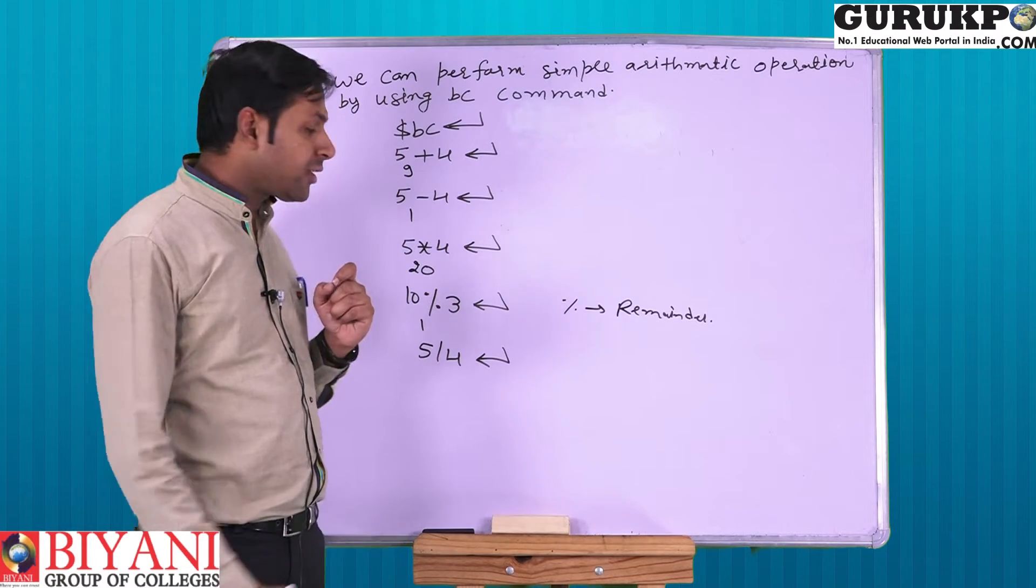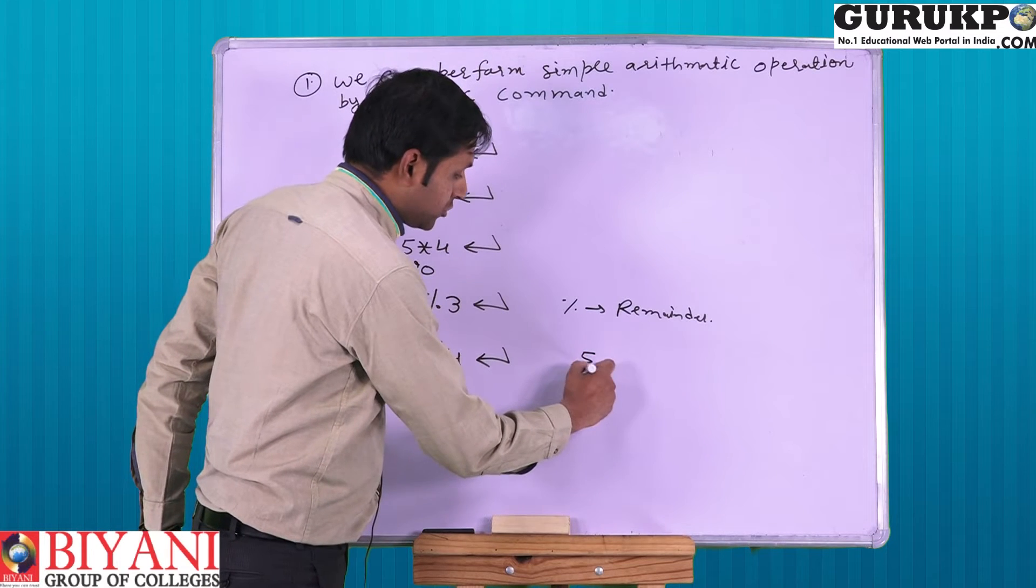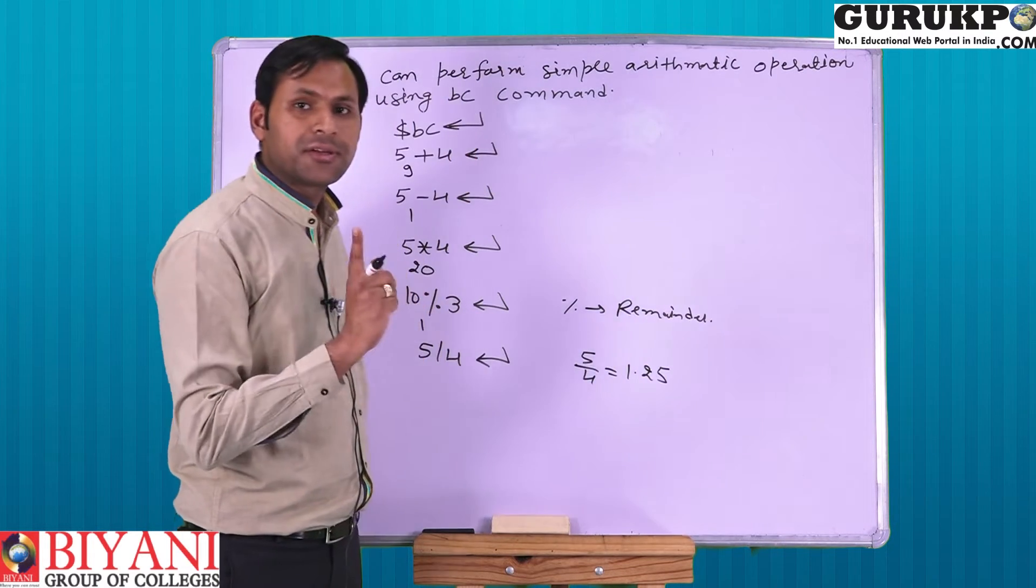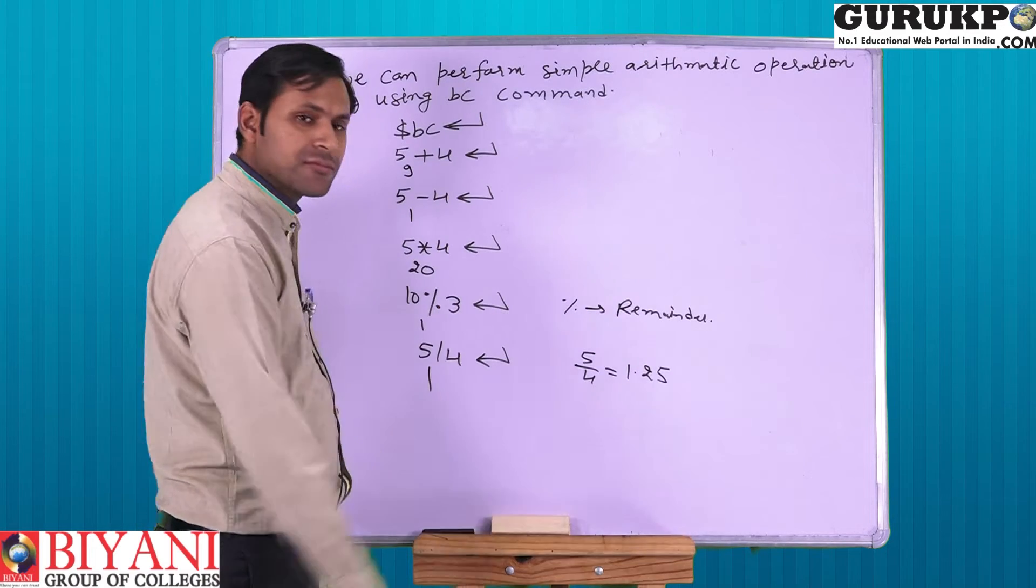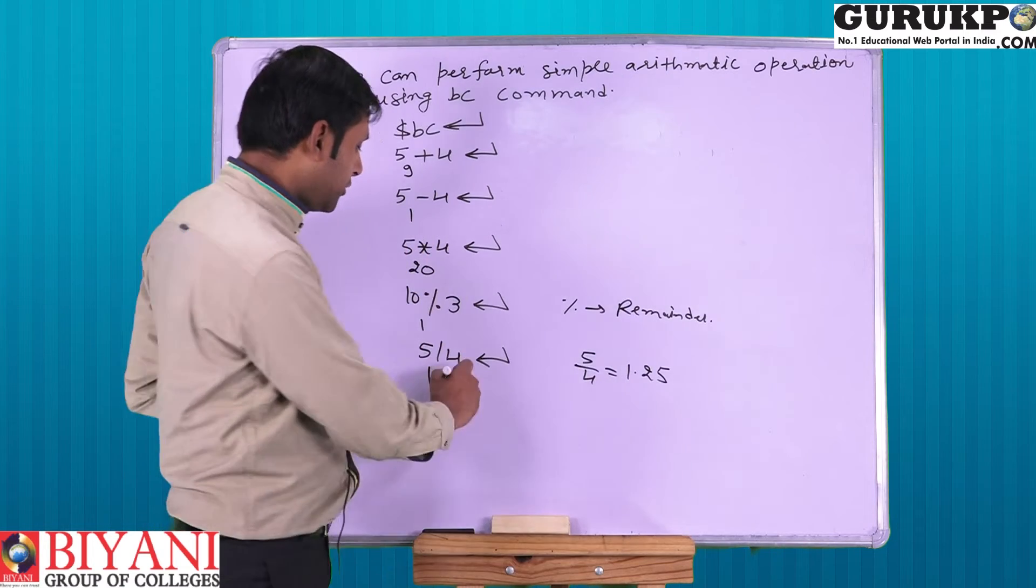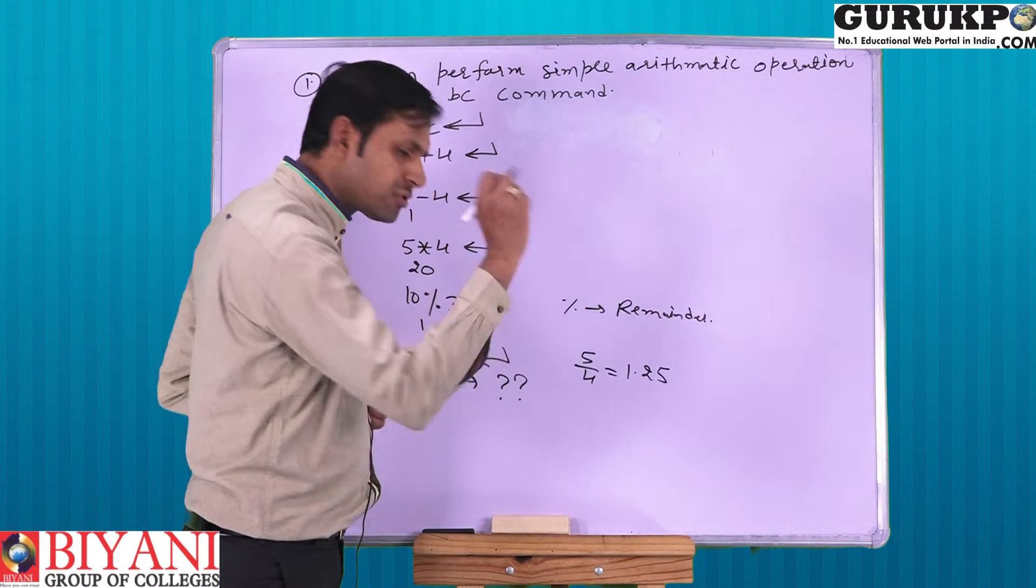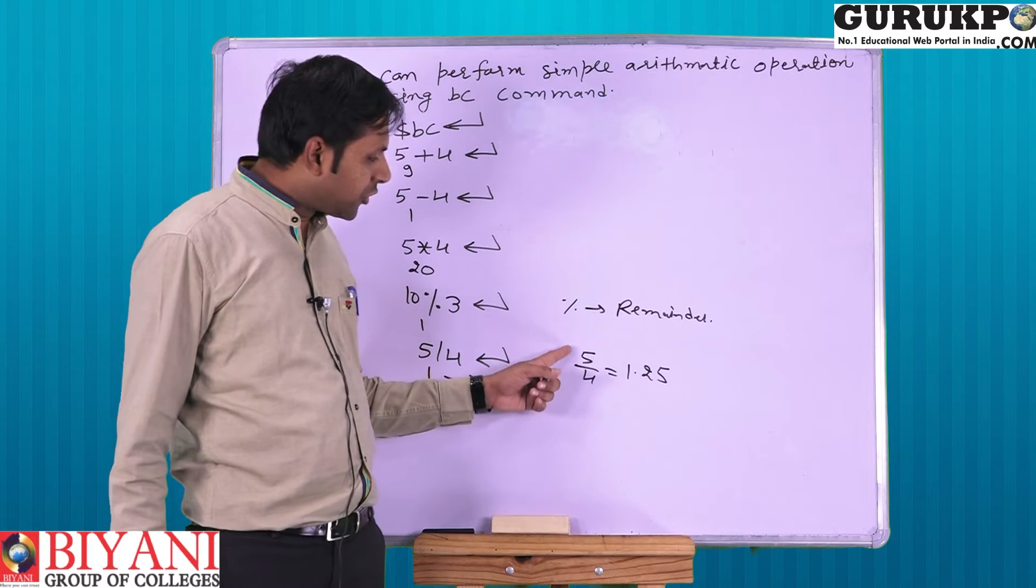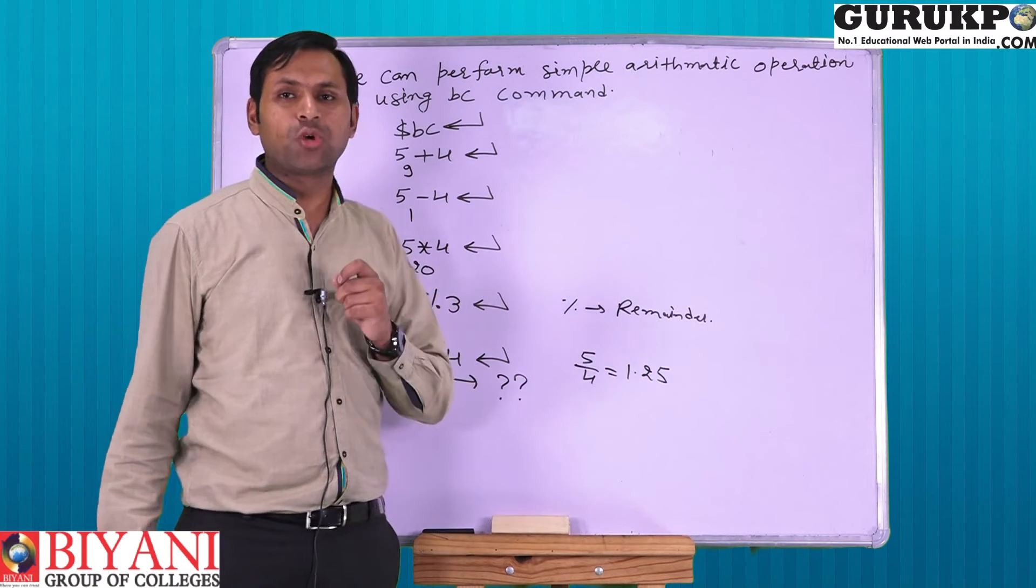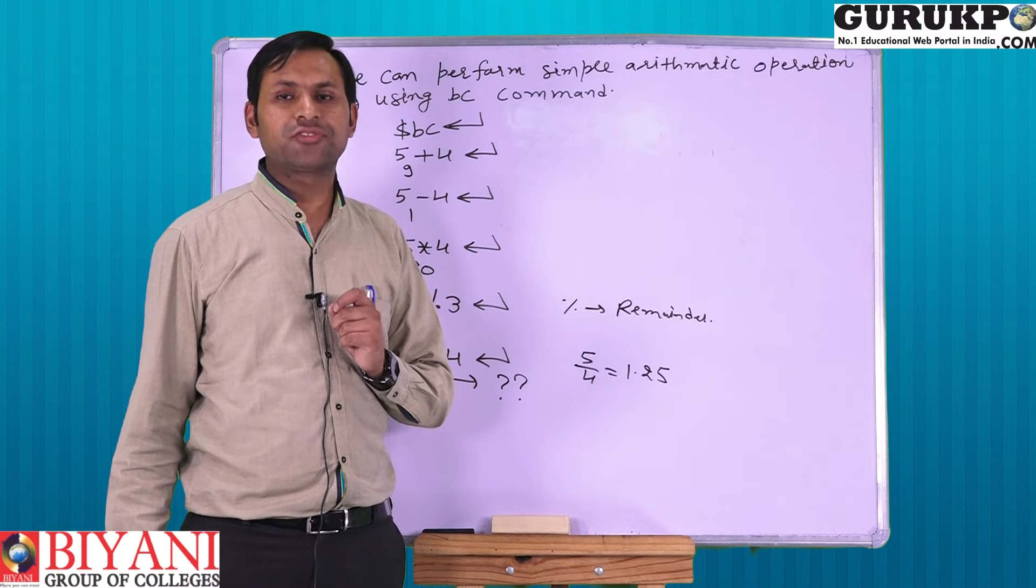Here we get 5 upon 4 is equal to 1.25 but result is 1. 5 by 4 is 1.25 but here we got 1. Why so? Then 5 by 4 is 1.25 but we get 1. What is the logic of this?